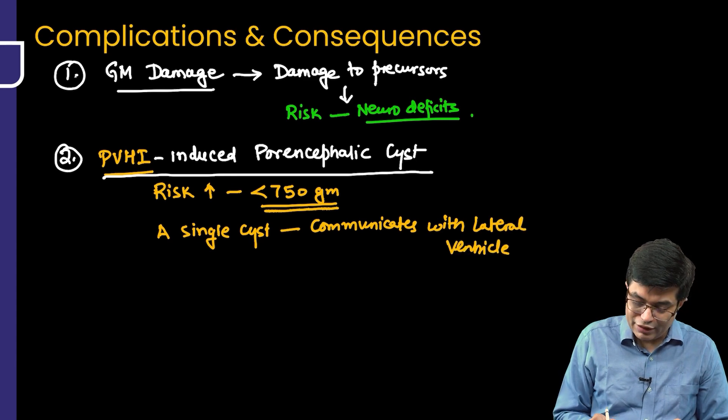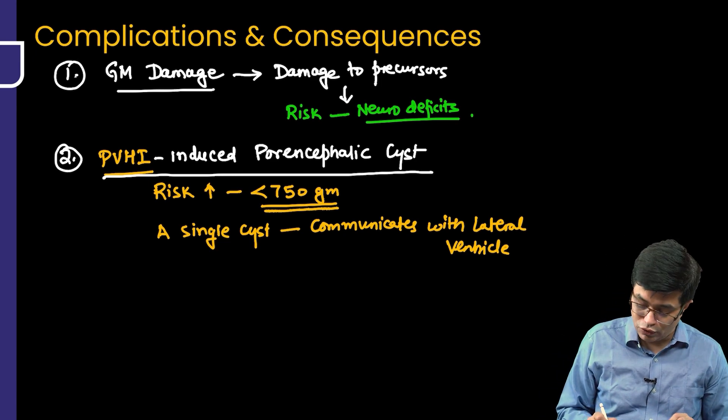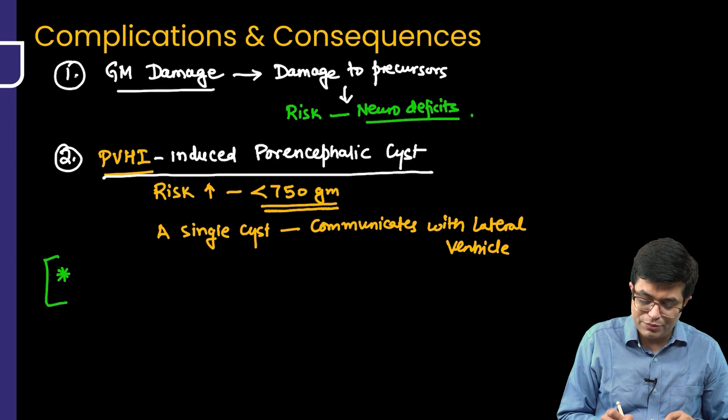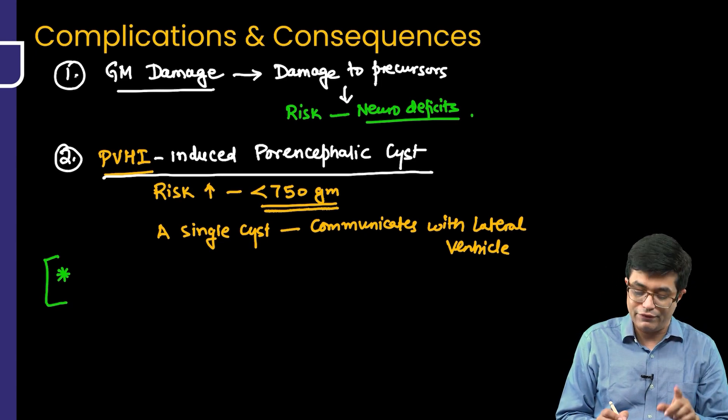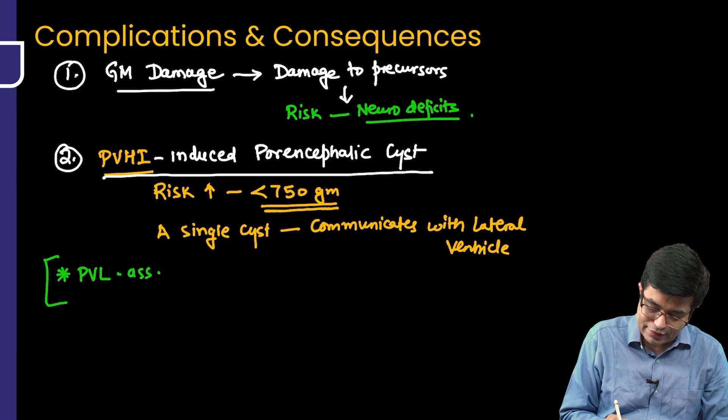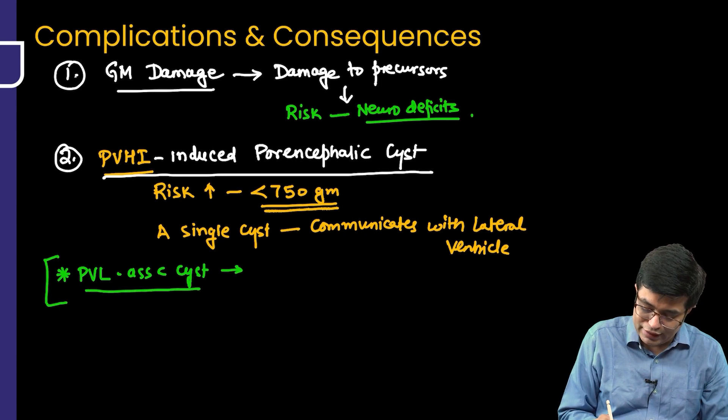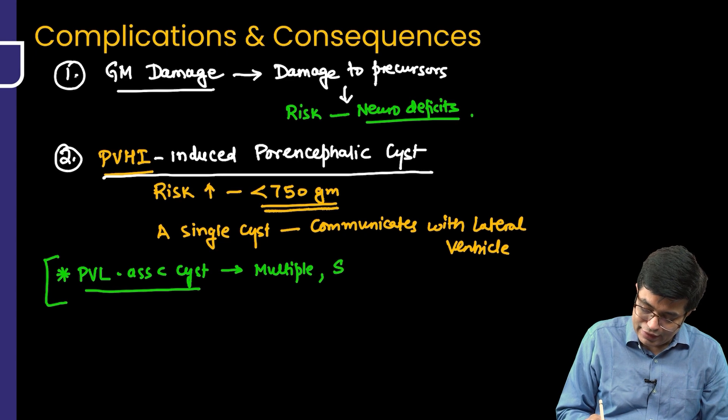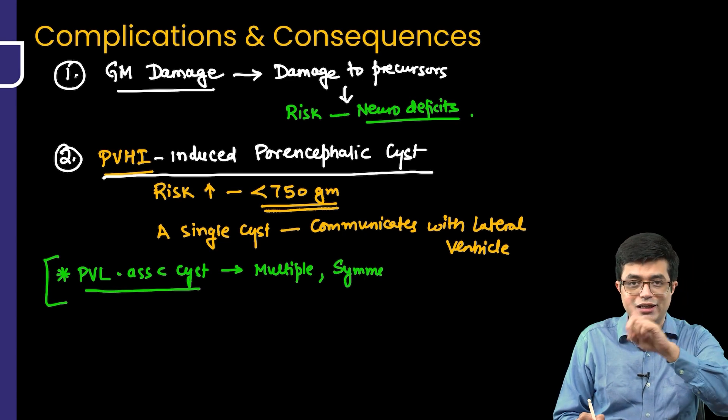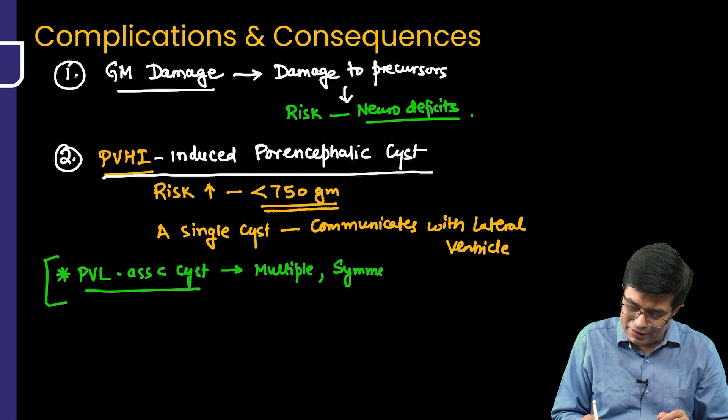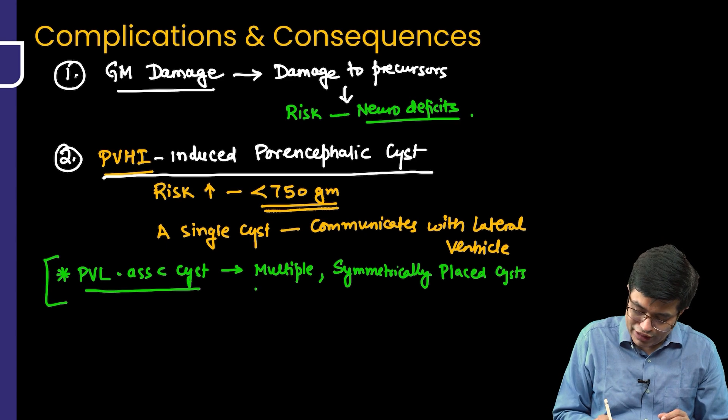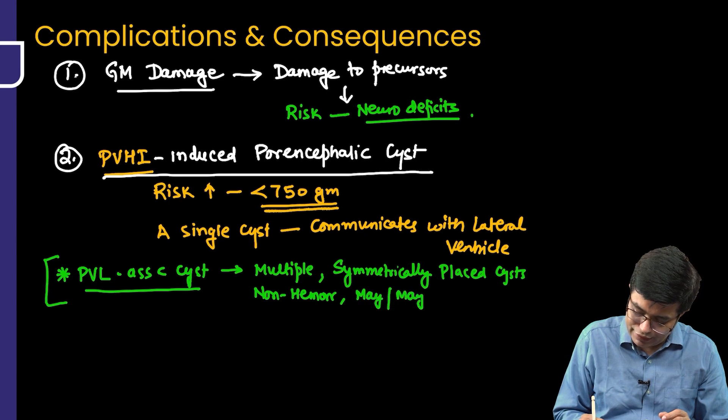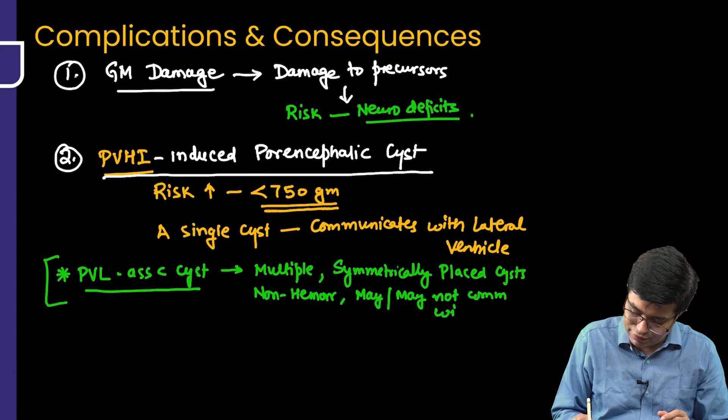We need to understand that porencephalic cyst can also sometimes form in periventricular leukomalacia. They can ask in exam: How will you distinguish PVHI induced porencephalic cyst from the PVL, periventricular leukomalacia induced porencephalic cyst? PVL associated cyst will not be a single cyst. Usually they are multiple cysts and they occur symmetrically. You know that PVL is a bilaterally symmetrical lesion, damage to white matter bilaterally. There will be symmetrically placed cysts, multiple symmetrically placed cysts and they are non-hemorrhagic in nature. And they may or may not communicate with the lateral ventricle.